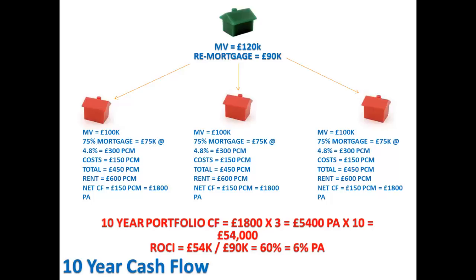Now we really want to look at the return on the money that you put in, or what's called ROCI. Most people get this concept confused with return on investment. Return on investment is the same as the yield of the property — how much money does that asset produce on a yearly basis, on an annual basis, relative to the total amount of money that has gone into obtaining that asset. Now yield is very important, but what it doesn't tell us is the return we get on our money, the money we've put into the deal.